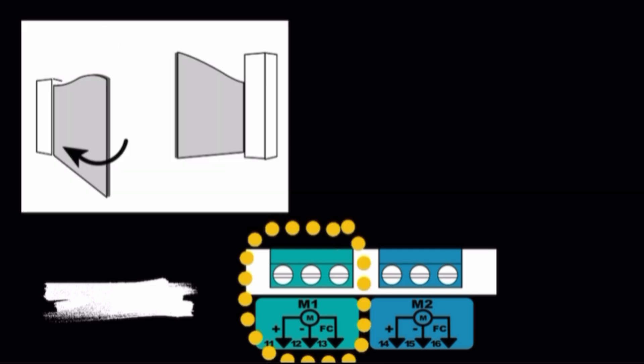Wiring the motors. M1 is the motor installed on the gate leaf which opens first and closes last. Wire the motor of the gate leaf that must open first and close last to connector M1.